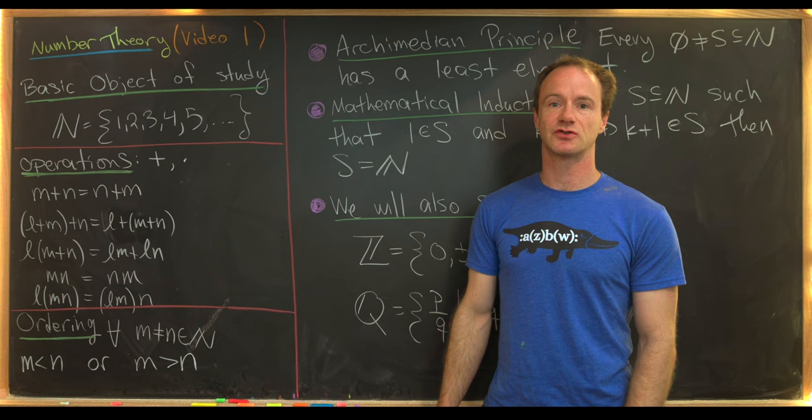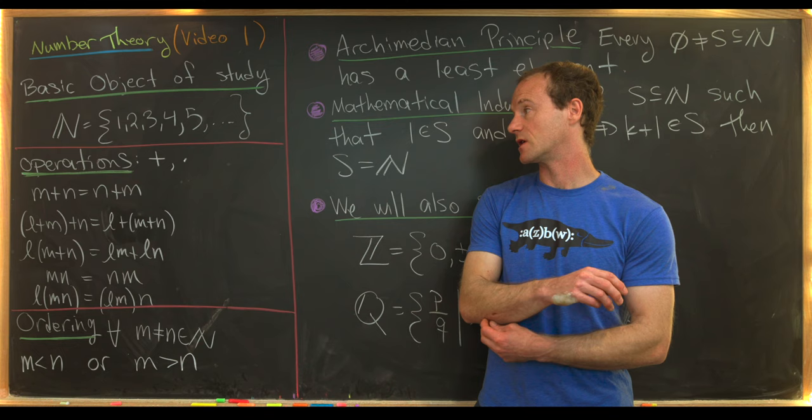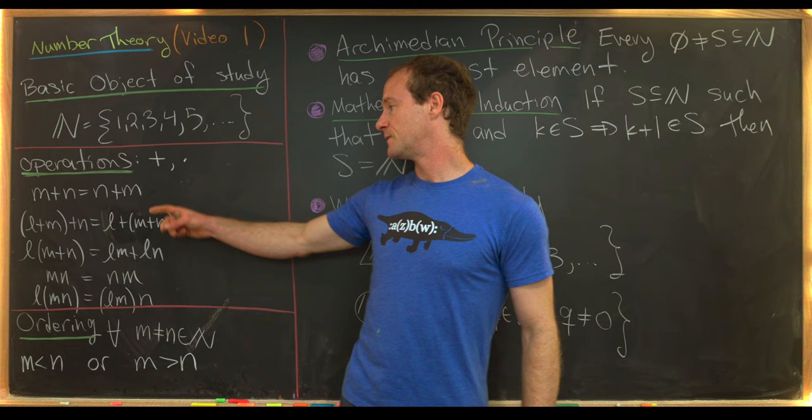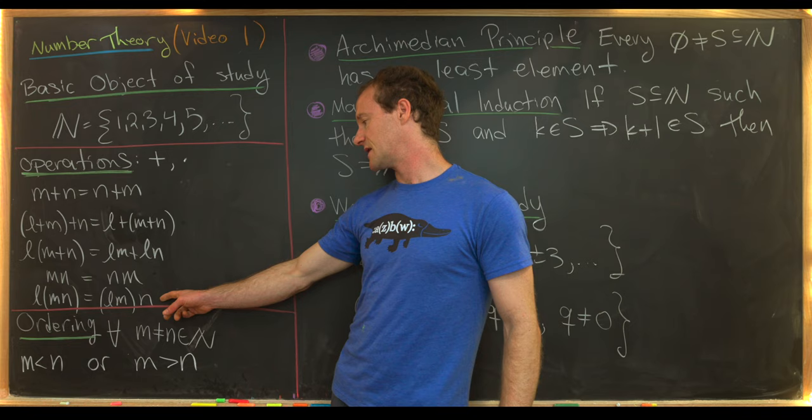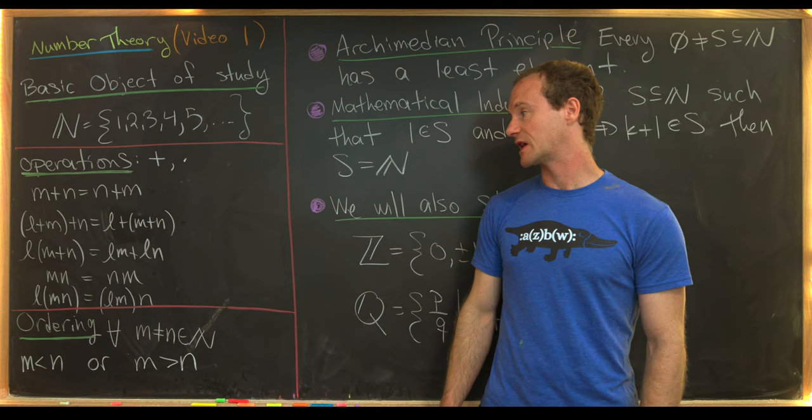There are two standard operations on the natural numbers: addition and multiplication. Addition is commutative and associative. Multiplication is commutative and associative, and furthermore we've got this nice distributive rule of multiplication over addition.